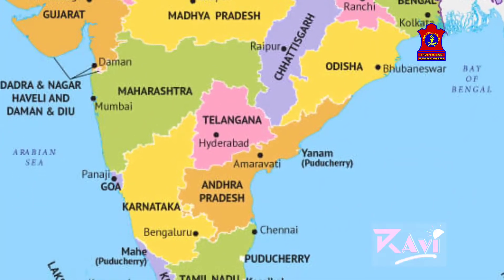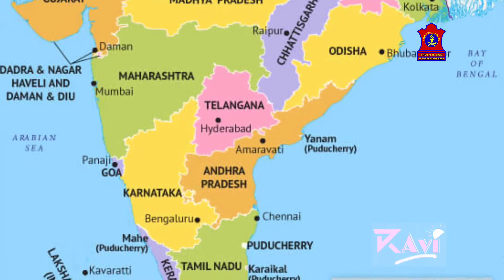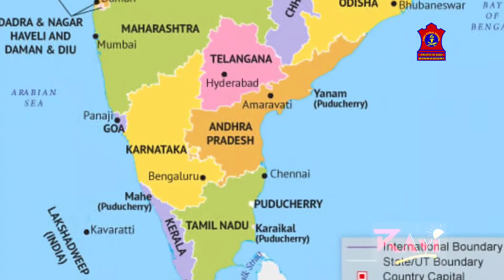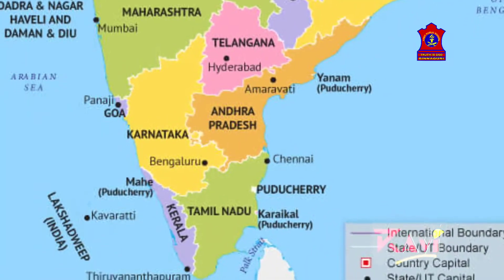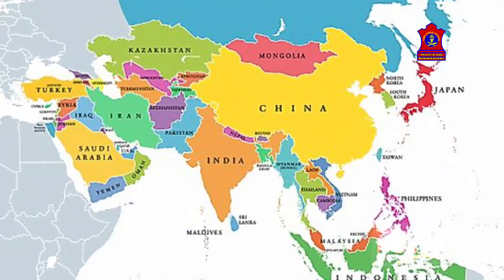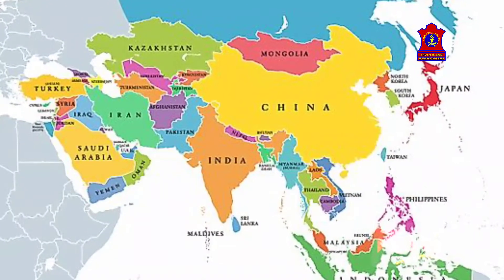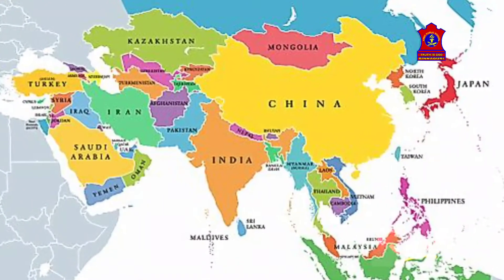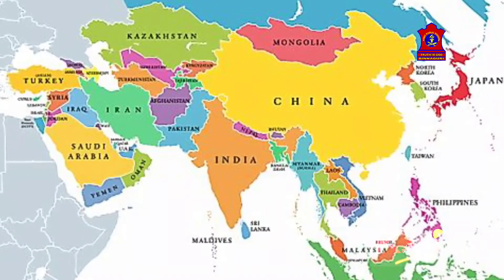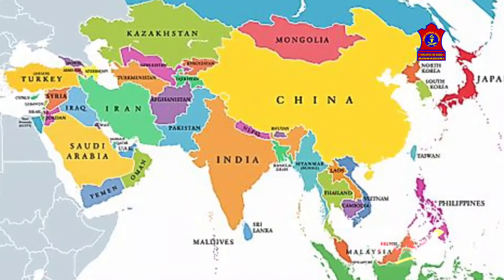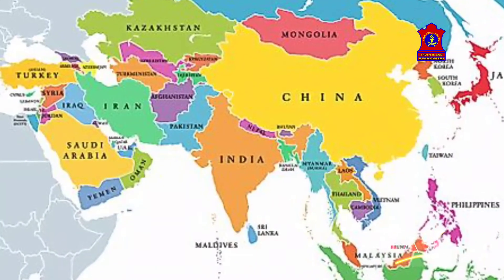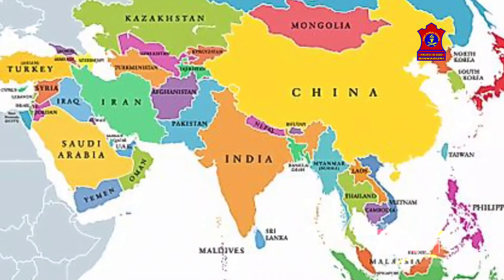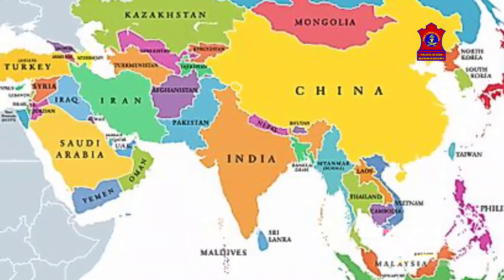As we all know, India is the seventh largest country in the world. It forms a large part of the Asian continent. It shares its borders with seven different countries, whom we call our neighbor countries.